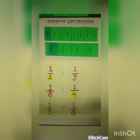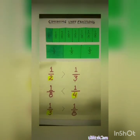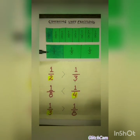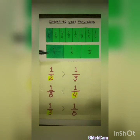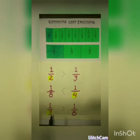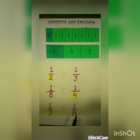Now we will discuss the next example. When we compare one by eight and one by three — yes, what do you notice, children? Very good. One by three is greater than one by eight. So children, one by three fraction is greater than one by eight.